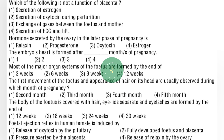Next question: which of the following is not a function of placenta? — option number 2: secretion of oxytocin during parturition. Next question: hormone secreted by the ovary in the later phase of pregnancy is — option number 1: relaxin. Next question: the embryo's heart is formed after how many months of pregnancy? — option number 1: 1 month. Next question: most of the major organ systems of the fetus are formed by the end of — option number 4: 12 weeks.